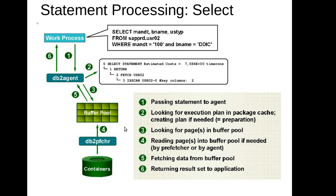Now imagine the work process has requested a SELECT statement, wanting to read from a SAPPRD.USERS table and fetching three columns depending on certain conditions. Let's see the flow of how a SELECT statement works in a DB2 environment. The work process sends the request to the DB2 agent. The DB2 agent will look at the execution plan in the package cache. Now you might be thinking — what is an execution plan, or what is a package cache?